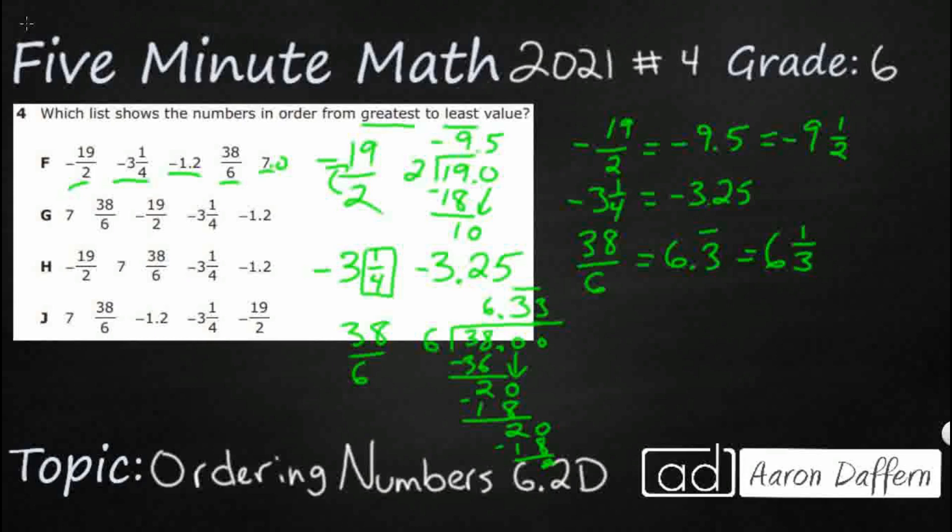And they already gave us a negative 1.2. And they also gave us a 7. But I'm going to call that 7.0 to make it a little bit easier. So, we need greatest.